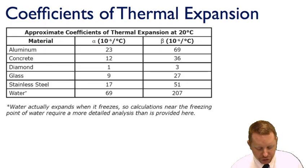Let's show a couple of coefficients of thermal expansion at 20 degrees Celsius. Material like aluminum has a linear coefficient of expansion of around 23 and a volumetric coefficient of expansion of about 69 times 10 to the minus 6 per degree Celsius. Concrete, 12 and 36, again roughly three times larger. Diamond, 1 and 3. Glass, 9 and 27. Stainless steel, 17 and 51. And water, 69 and 207.